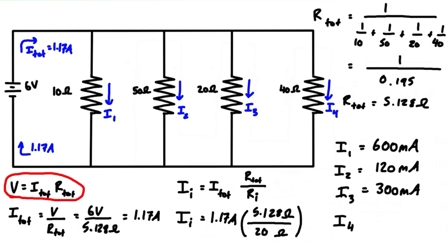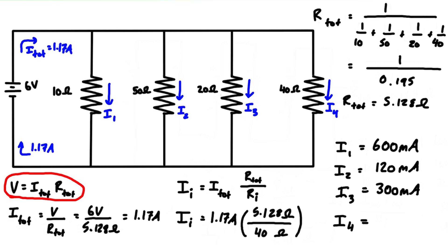Lastly, for resistor 4, we divide by 40 ohms. 1.17 times 5.128 divided by 40 gives us 0.15 amps, which is equal to 150 milliamps. You can convert between amps and milliamps by a factor of a thousand.